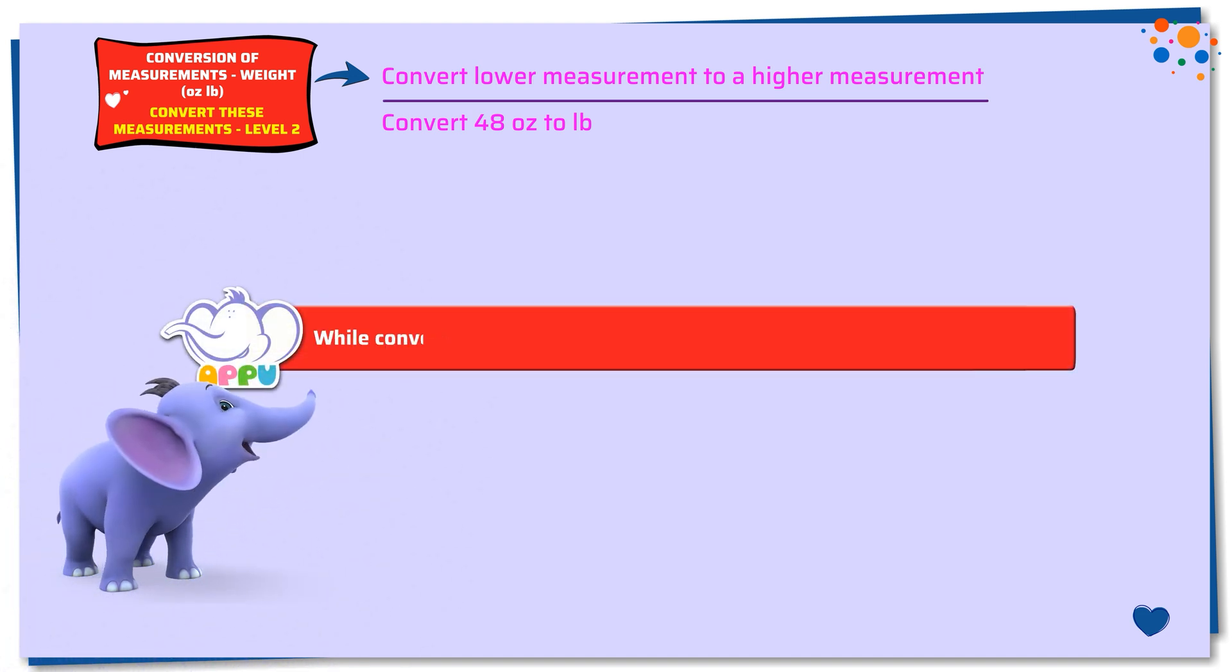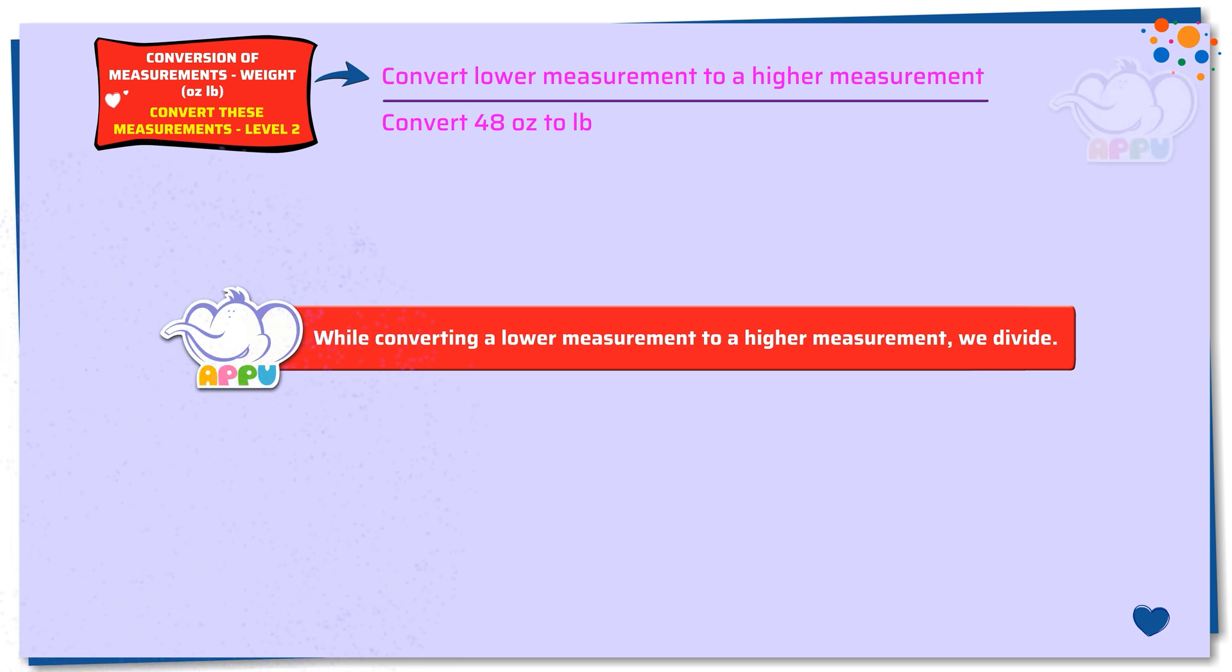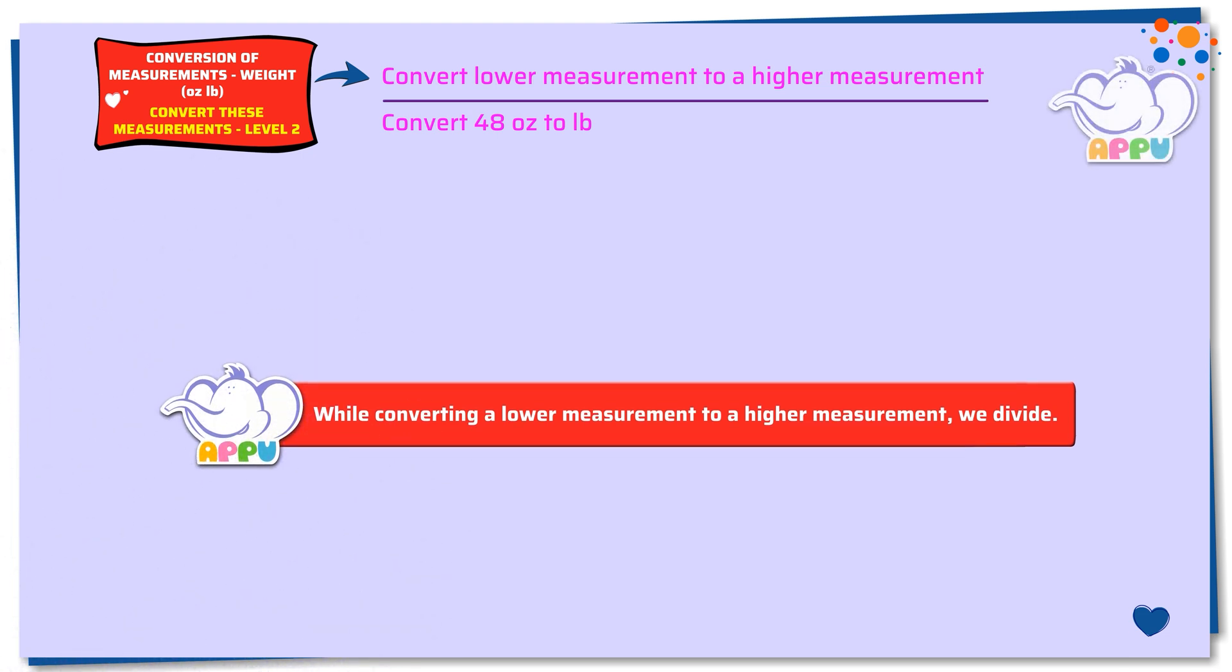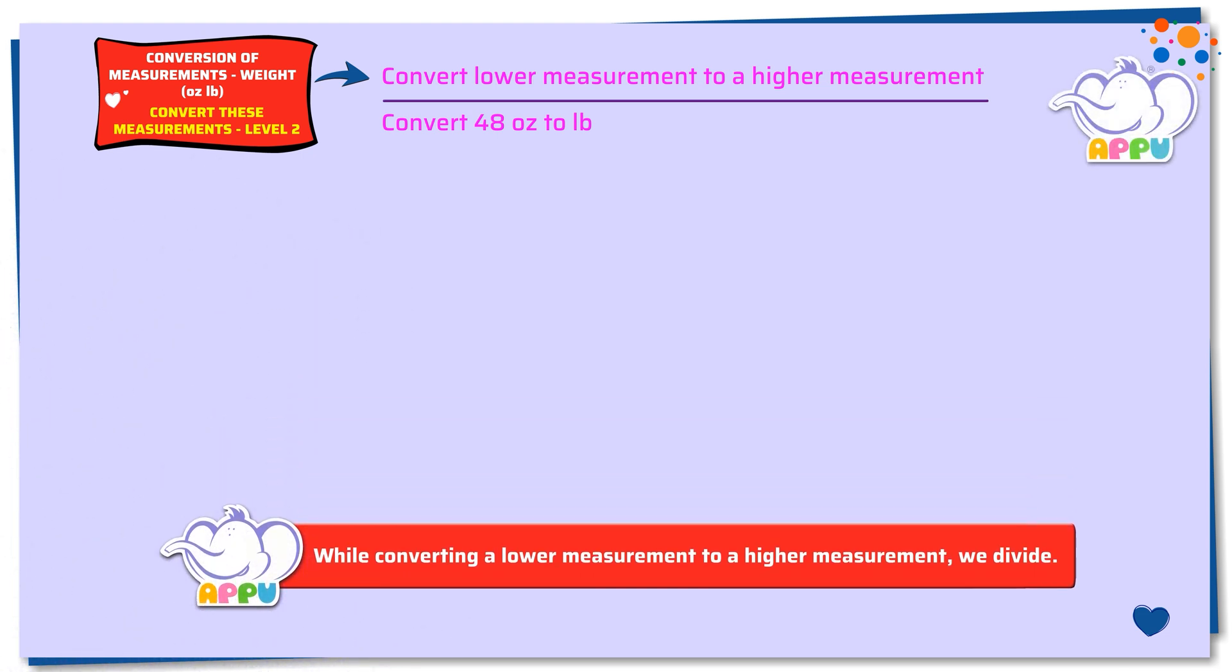While converting a lower measurement to a higher measurement, we divide. Here we need to find how much is 48 ounces in pounds. We know that 16 ounces equals 1 pound.